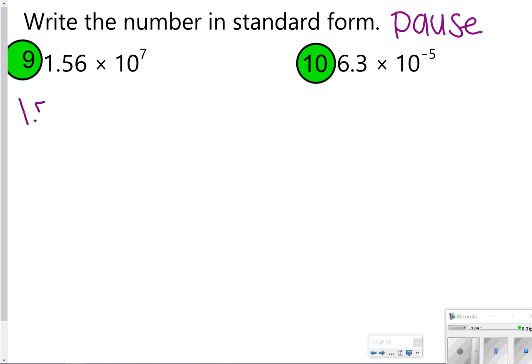Okay, so for number 9, we're starting with 1.56. I'm moving it 7 to the right. 1, 2, 3, 4, 5, 6, 7. Filling up, we've got five zeros. So that's 15,600,000.